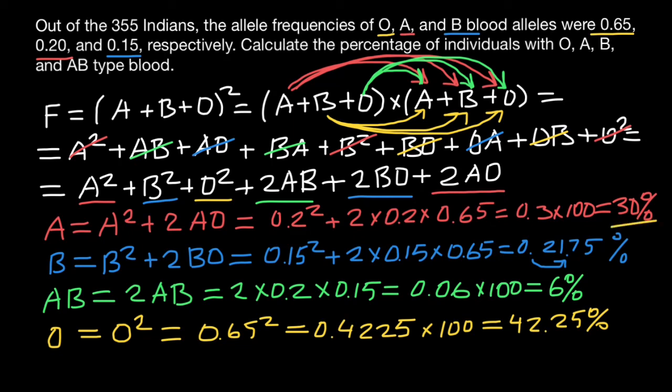So our final answers are: 30% of individuals belong to blood group A, 21.75% belong to blood group B, 6% belong to blood group AB, and 42.25% belong to blood group O. That's all for today — subscribe and see you in the next video. Goodbye!